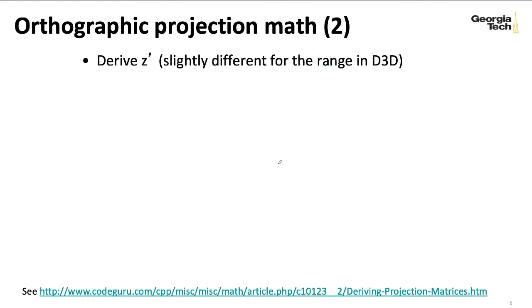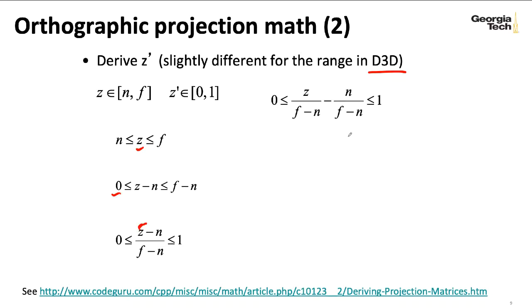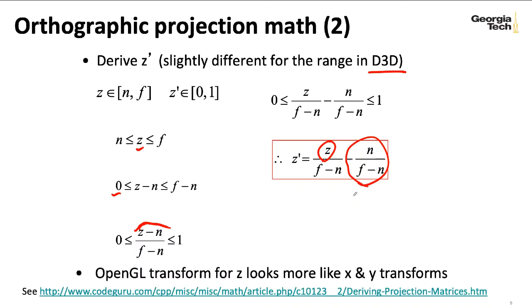Now let's think about z. If we're doing the Direct3D convention, we want near and far to map to 0 to 1. When we do this mapping, we'll subtract by n to put the left point of our z range to 0, then divide by f minus n. We can split this into two terms, one is a multiplier on z and the other is a constant. The OpenGL standard maps z to minus 1 to 1 instead of 0 to 1.